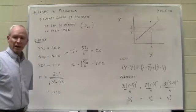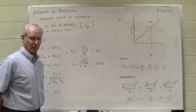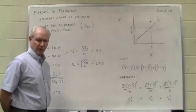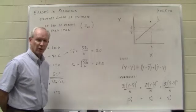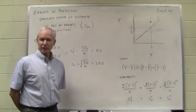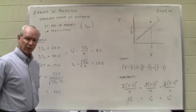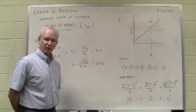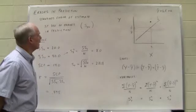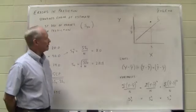When we make our predictions from the regression formula that we came up with last time, those predictions are not likely to be perfect. In fact, if the correlation coefficient between x and y is modest, there'll be pretty substantial errors in prediction. We would like to be able to make predictions and then specify how much error there is likely to be in those predictions. What we're looking for is something called the standard error of estimate.